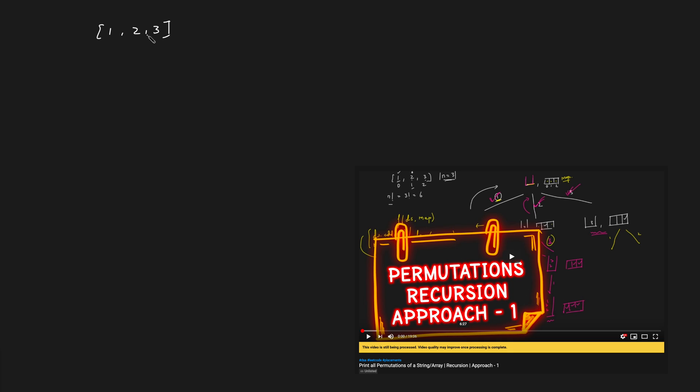This is a continuation video for the permutation problem. In the previous solution, we were using an extra map array and an extra data structure in the recursion. Here we will not be using an extra map or extra data structure to form the permutation. Instead, we are going to use a different technique of swapping to generate all the permutations.